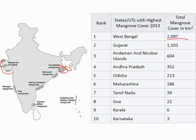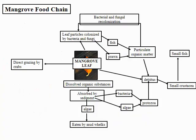Looking at state-wise mangrove distribution in India, West Bengal has the largest coverage — around 2,000 square kilometers including the Sundarbans. Gujarat has around 1,000 square kilometers, with mangroves like Ranap gach found there. Karnataka in the Mangalore region has very little mangrove, as does Kerala which has huge backwaters but less mangrove cover. Goa also has very little. The Krishna-Godavari delta in Andhra Pradesh has a huge mangrove area.